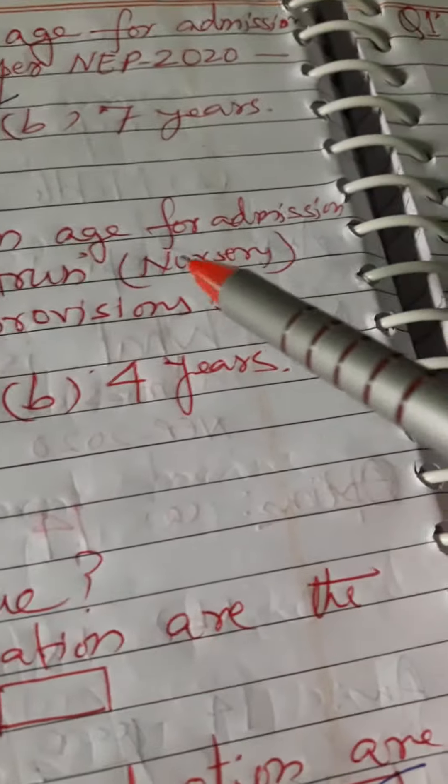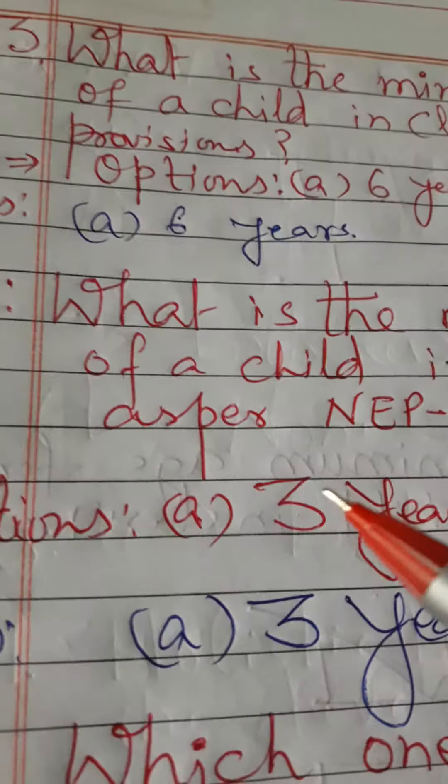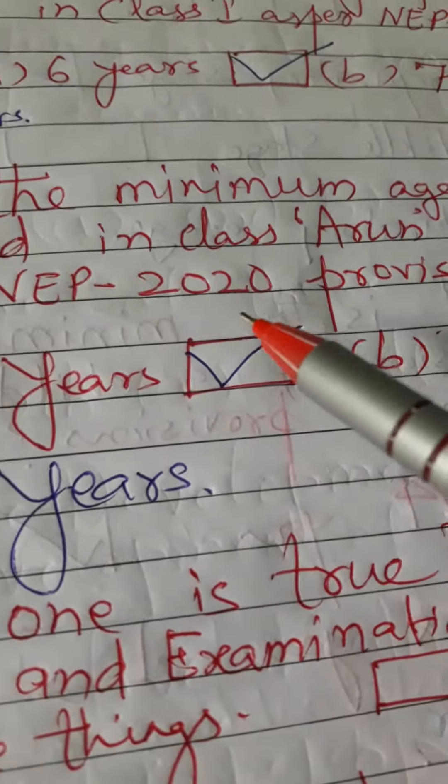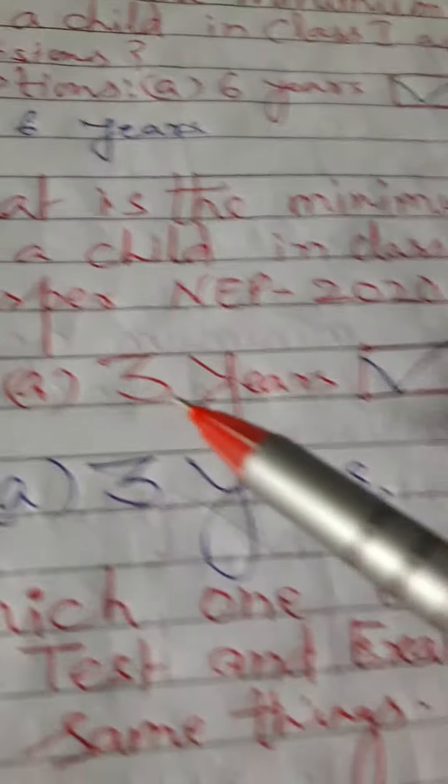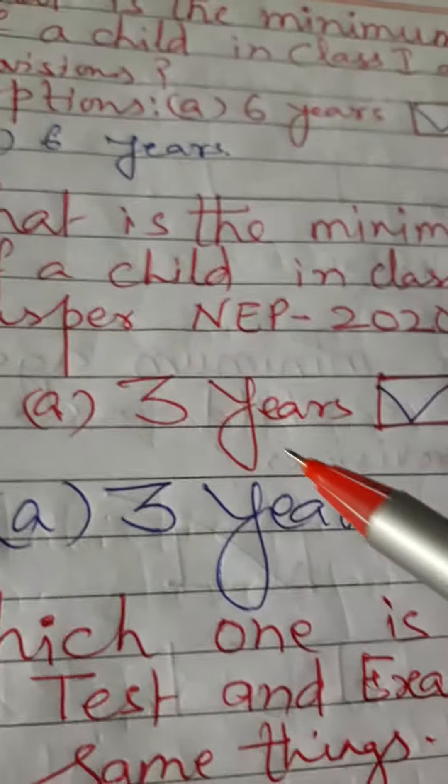Question 14. What is the minimum age for admission of a child in class nursery as per National Educational Policy 2020 provisions? Option first is 3 years and option second is 4 years. So correct answer is 3 years.